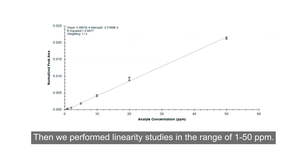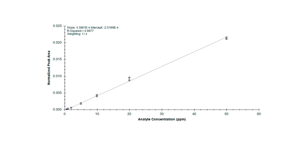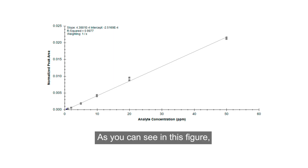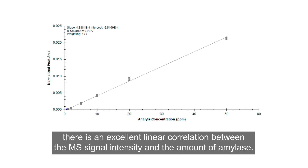Then we performed linearity studies in the range of 1 to 50 ppm. And, as you can see in this figure, there is an excellent linear correlation between the MS signal intensity and the amount of amylase.